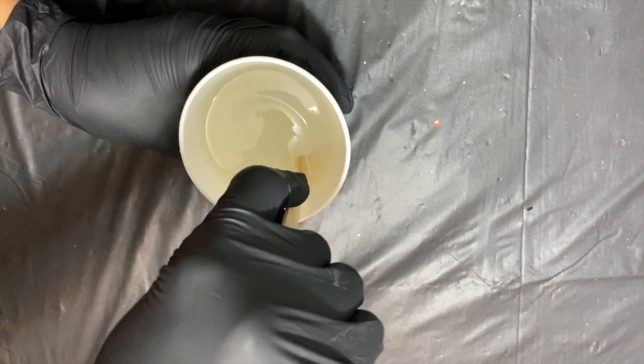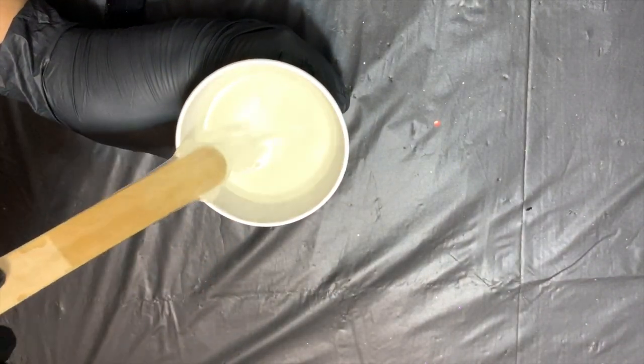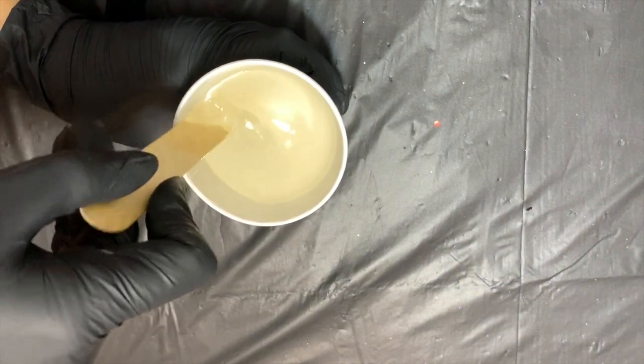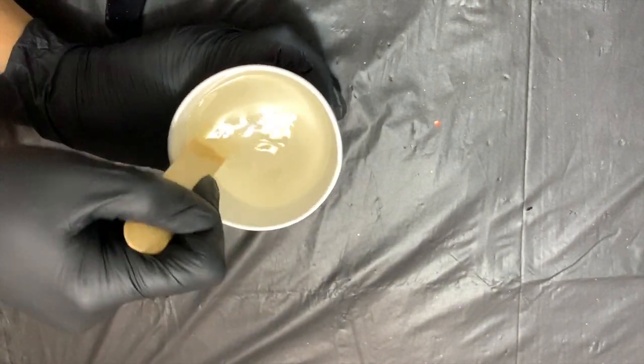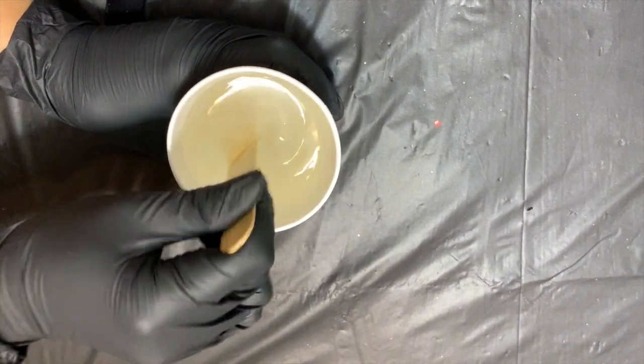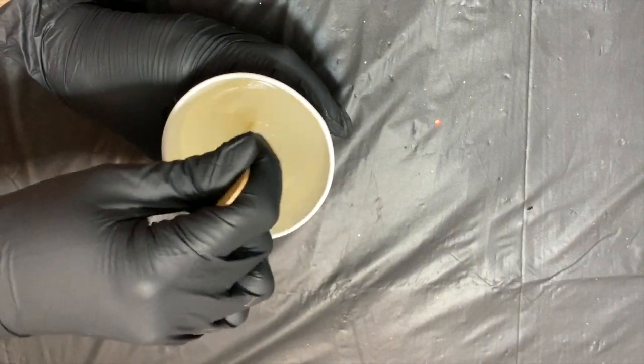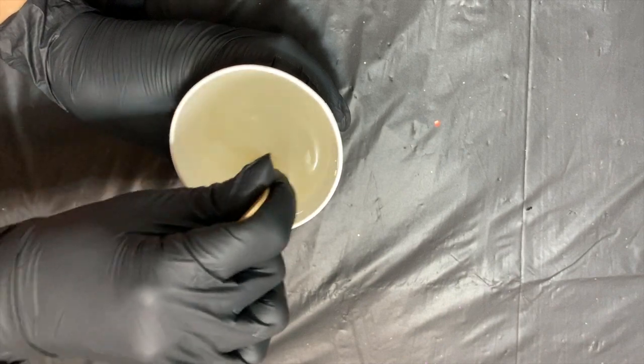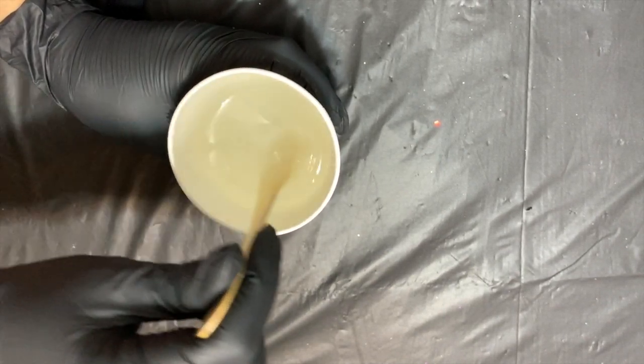Mixing resin can be fairly simple, but you want to make sure that you're following one key rule: scrape everything. This means scrape your spatula, your popsicle stick, or whatever you're using to mix, scrape the sides, scrape the bottoms, and continue to scrape, scrape, scrape, scrape, scrape. You'll notice I do this the entire time I'm mixing. You want to make sure that you're bringing the resin up from the bottom and off of the sides constantly. That way all of it gets mixed. If you don't scrape, you will have a bad mix.